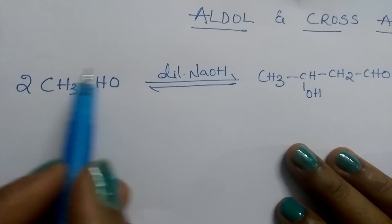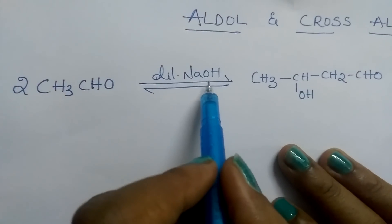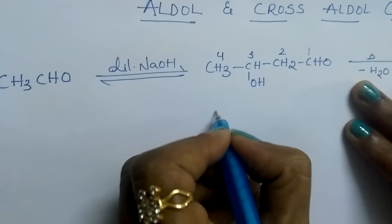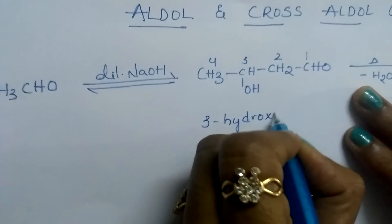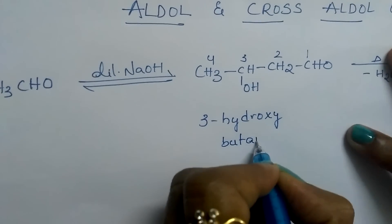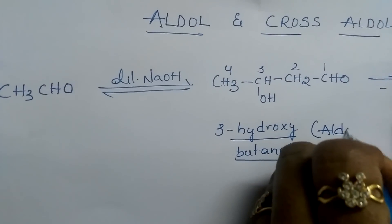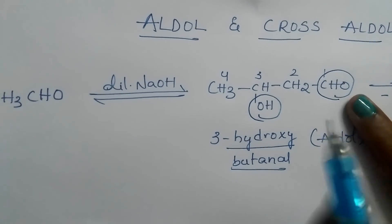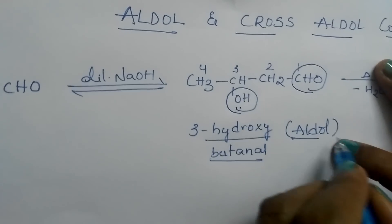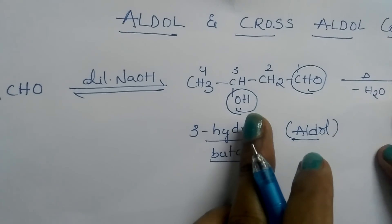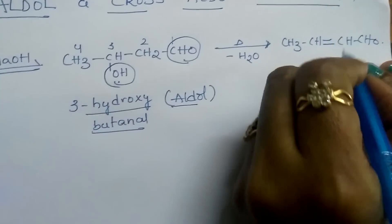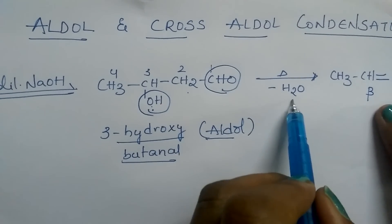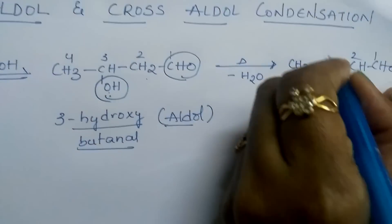Here, 2 moles of acetaldehyde undergo reaction in the presence of a base like NaOH, resulting in the formation of 3-hydroxybutanal. This product is called aldol because of the presence of both an alcohol group and an aldehyde group. This aldol then undergoes condensation where OH and H are released as a water molecule, forming an alpha-beta unsaturated carbonyl compound.